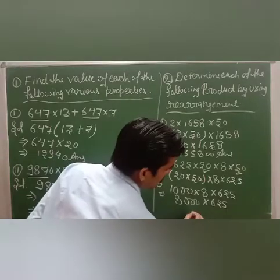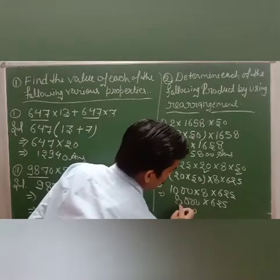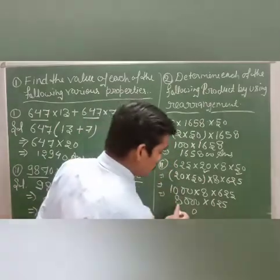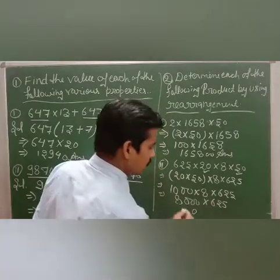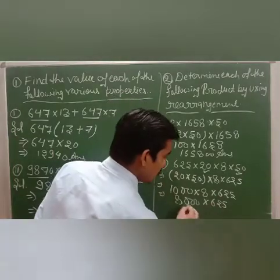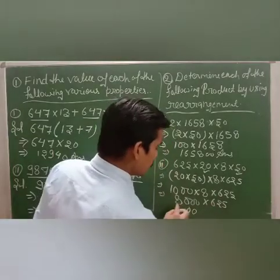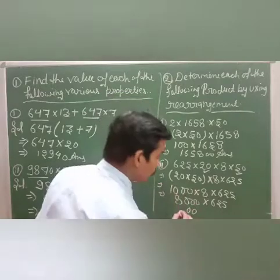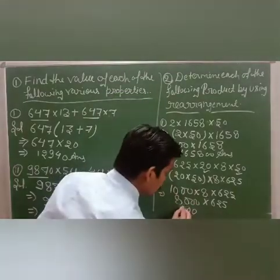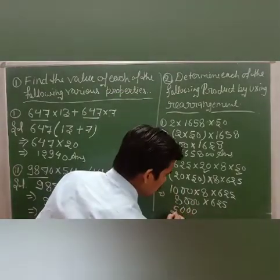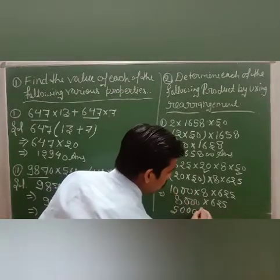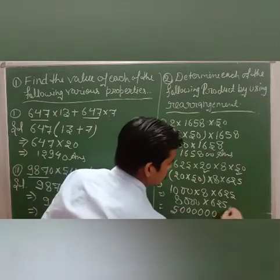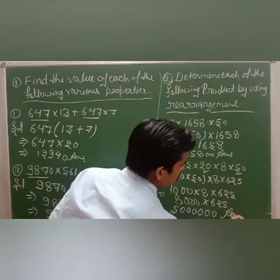Multiplying 8 into 625: 8 fives are 40, carry 4; 8 twos are 16 plus 4 is 20, carry 2; 8 sixes are 48 plus 2 is 50. With the trailing zeros, this is your answer: 5,000,000.